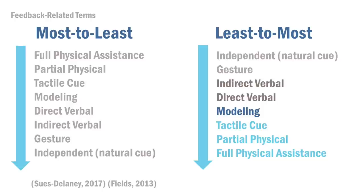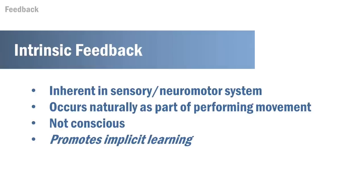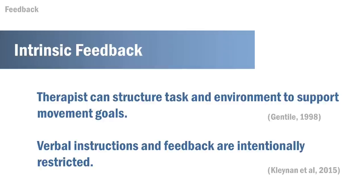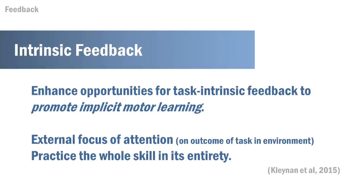The intrinsic feedback is inherent in the sensory motor system and is not conscious, promoting implicit learning. Since intrinsic feedback is not under conscious control, implicit learning can be facilitated by structuring the task and the environment to support effective movement patterns. We want to limit verbal feedback, as that would contribute to more conscious learning. This will enhance implicit motor learning, involving the external focus of attention and practicing the whole skill in its entirety.